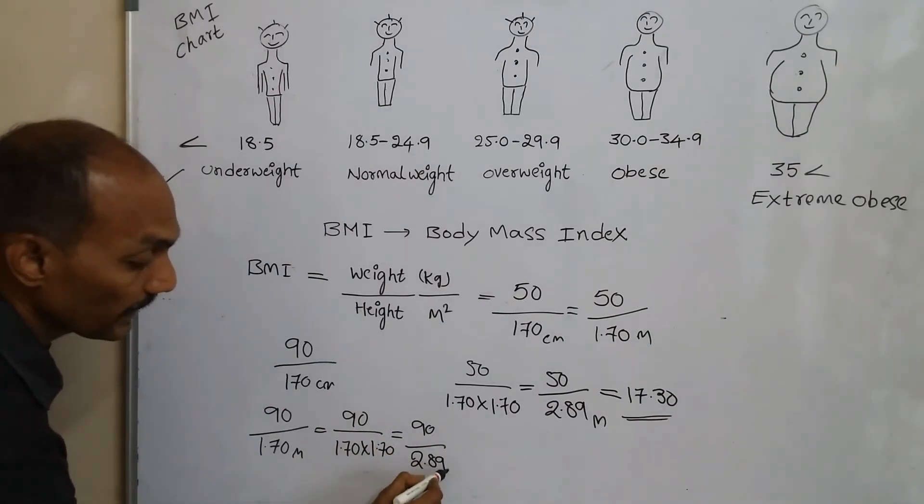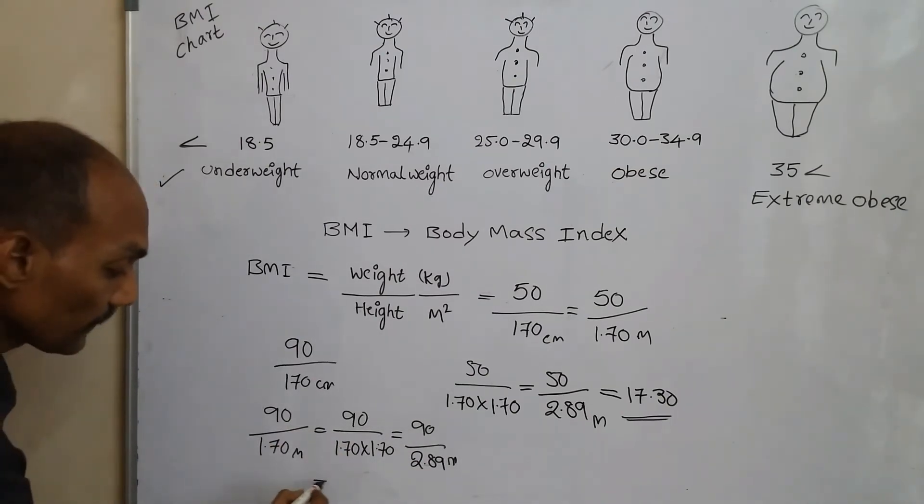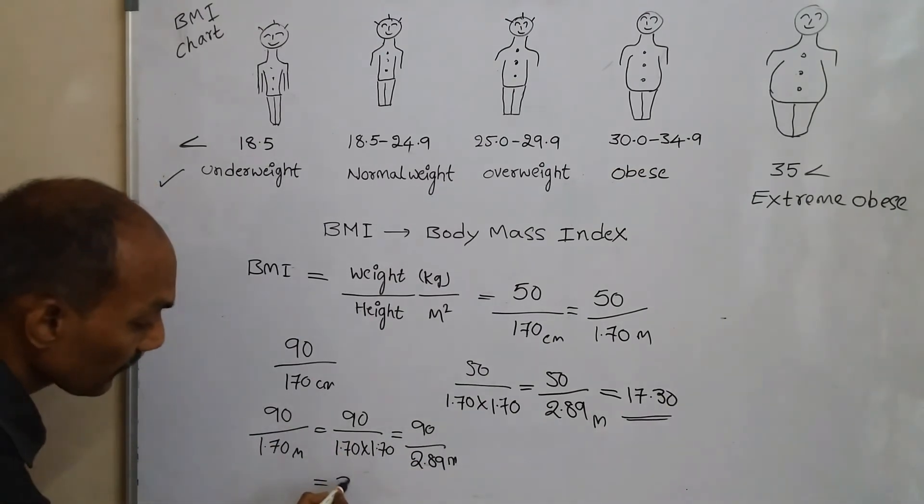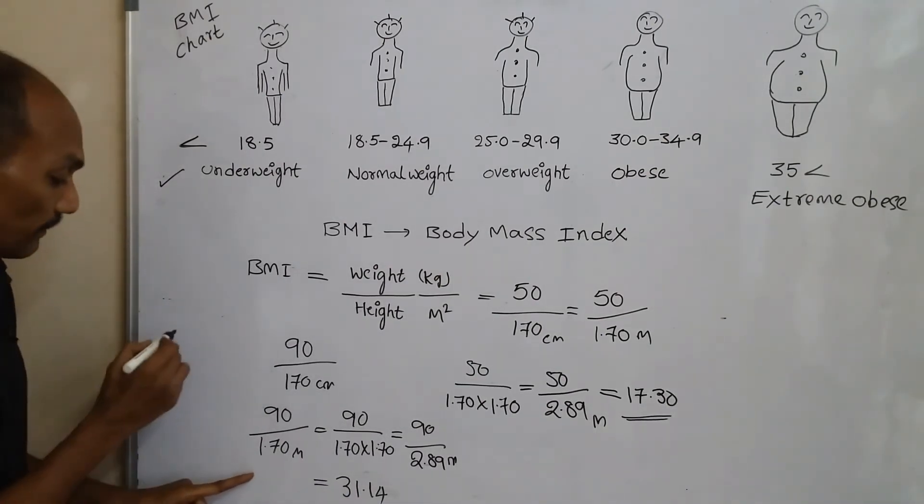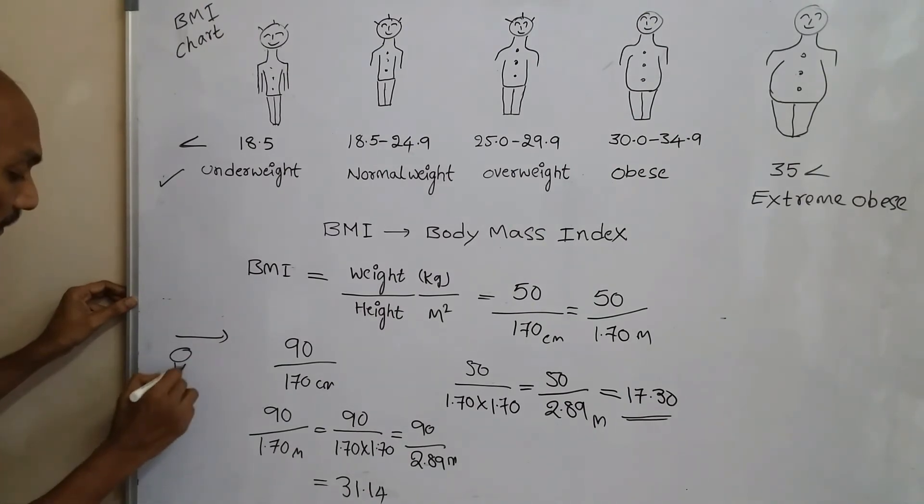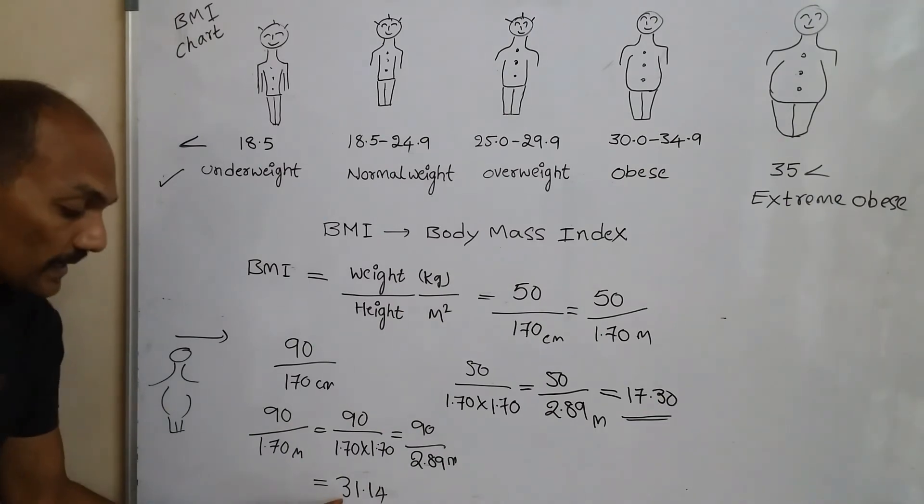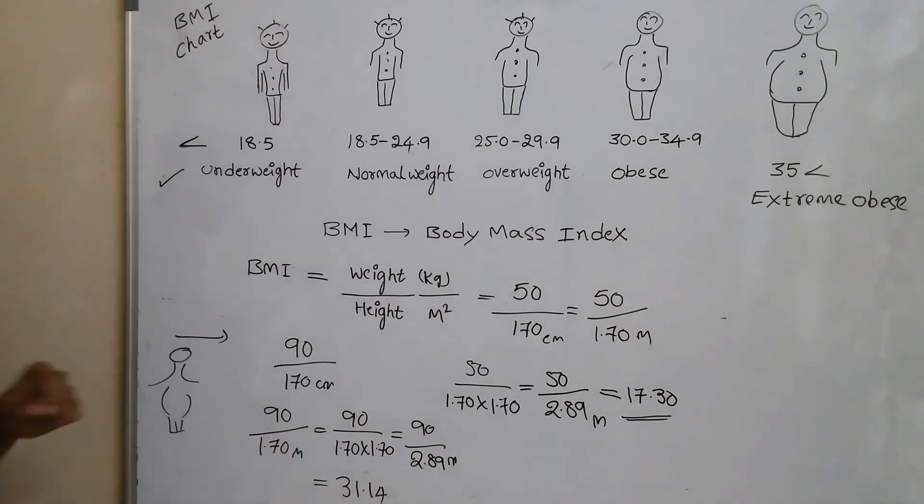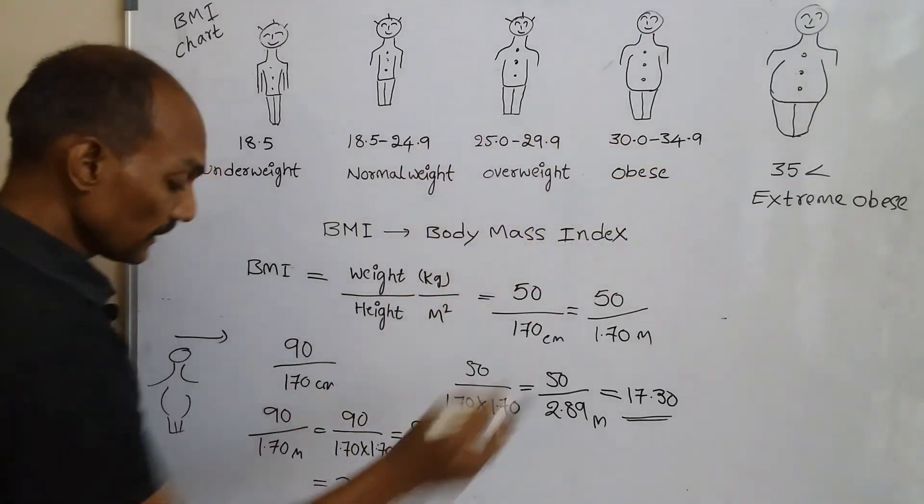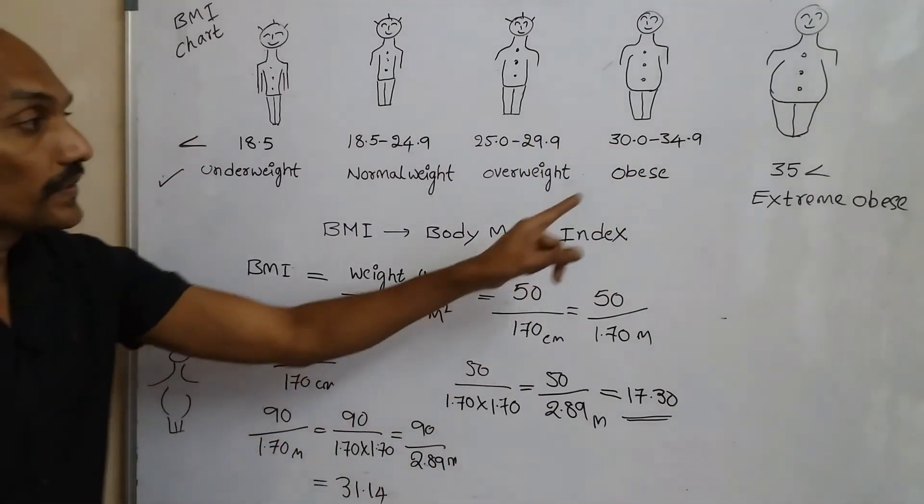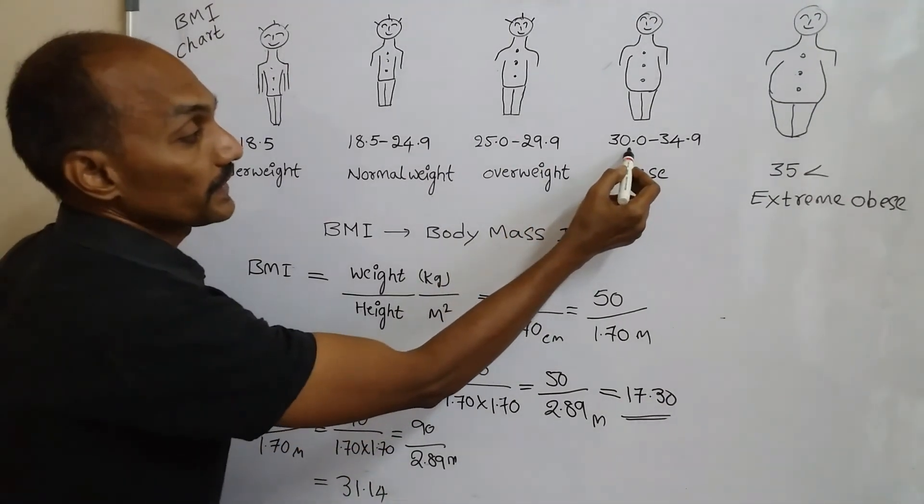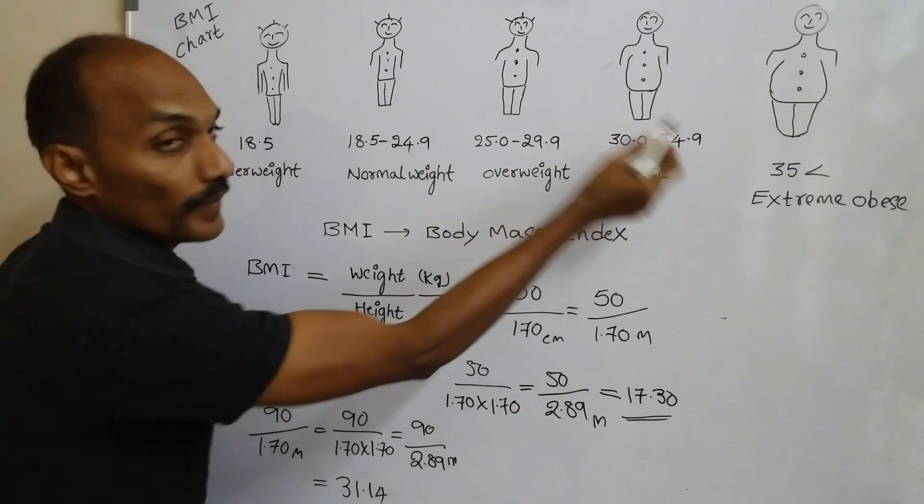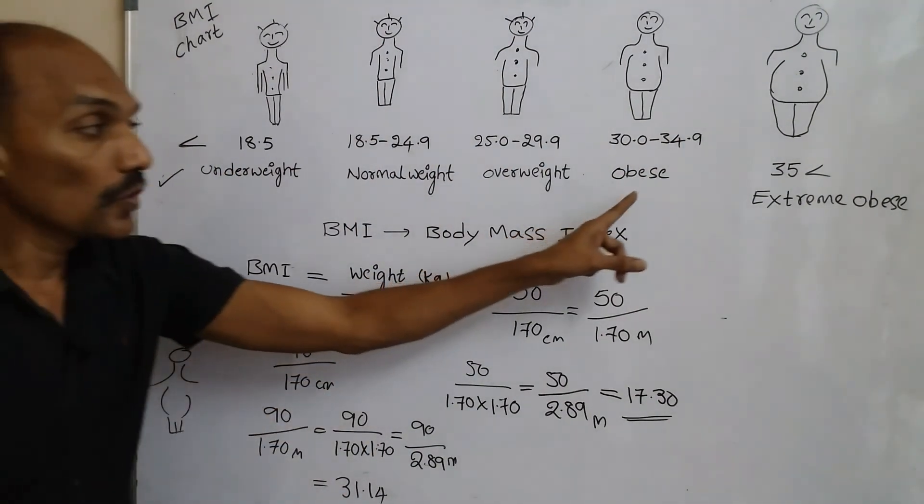So here 90 divided by 2.89 meters. Then after here 31.14. So the person's BMI is 31.14. Here according to the BMI chart, he is under obesity because his BMI is between 30 to 34.9, so it's called obesity - that means is overweight.